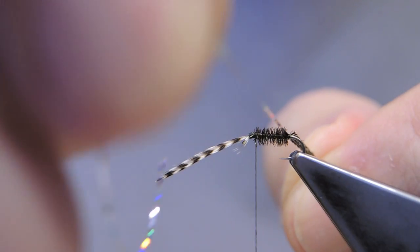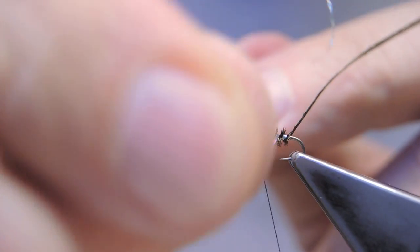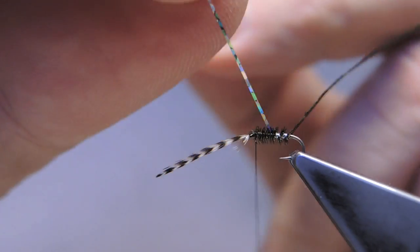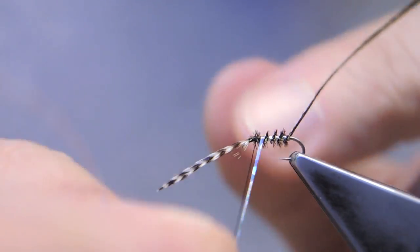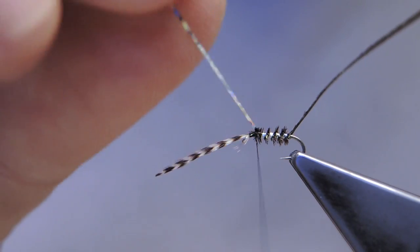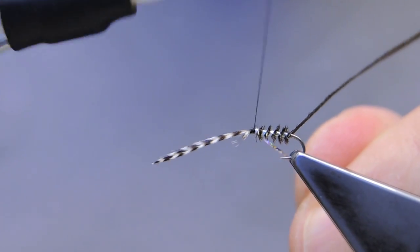Then trap the peacock hurl tip with the tinsel and spiral that back evenly spaced towards the front and tie it off.